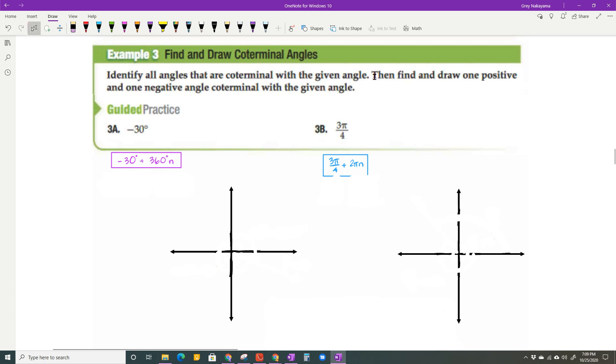Now the next thing we have to do is find and draw one positive and one negative coterminal angle with the given angle. So when I do this first, negative 30 degrees, negative means that I'm going in a clockwise direction. So negative 30 degrees is going to be somewhere around there. So that's my negative 30 degrees.